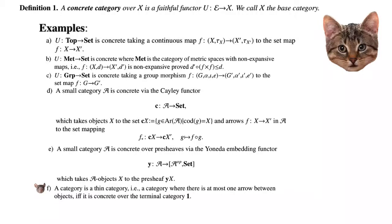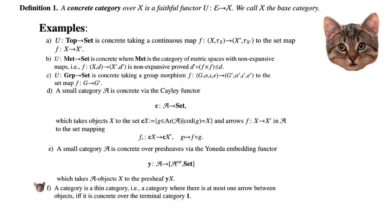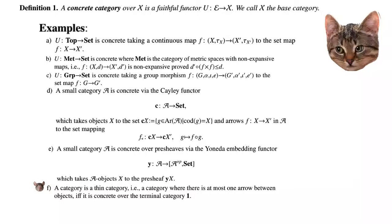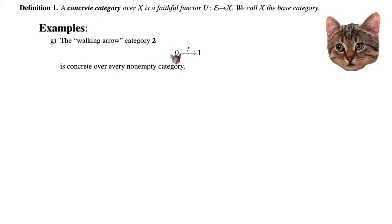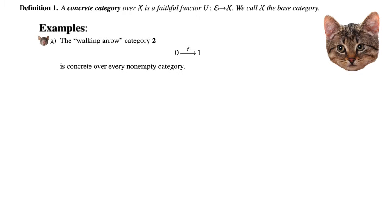Another example: a category is thin if there is at most one arrow between every pair of objects — the hom-set is either empty or a singleton. A category is thin if and only if it is concrete over the terminal category 1, which is the category with a single object and a single identity arrow. Additionally, the walking arrow category — which consists of two distinct objects and one non-identity arrow between them — is concrete over every non-empty category.